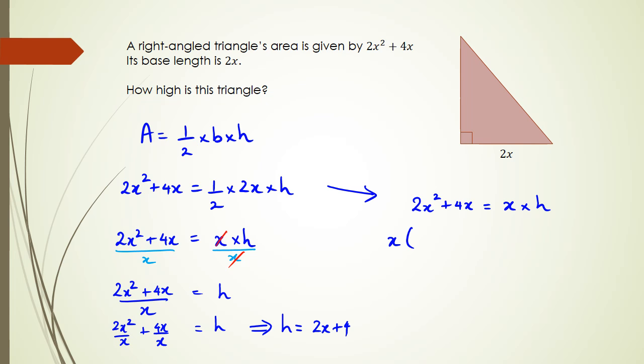If you look at the left hand side you can actually see that x is a common factor, so you can take x out as a common factor. When you do that you get 2x + 4 equals x times h, and so from here we can say therefore h is equal to 2x + 4.